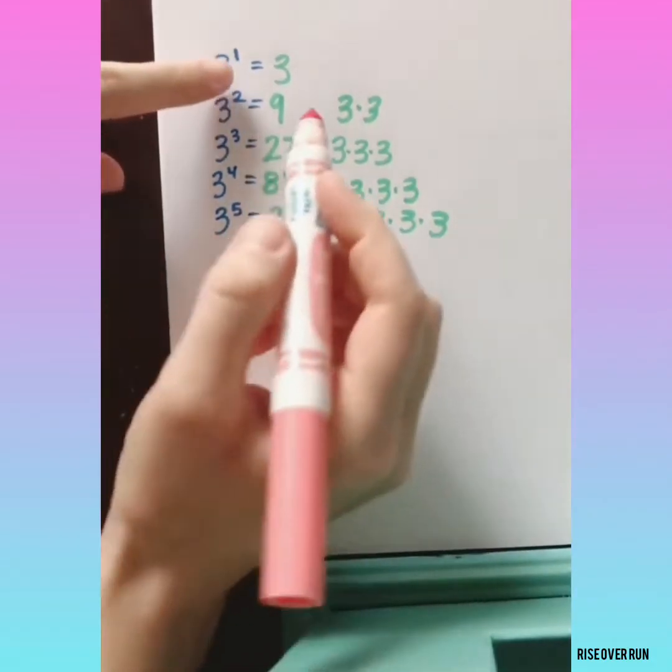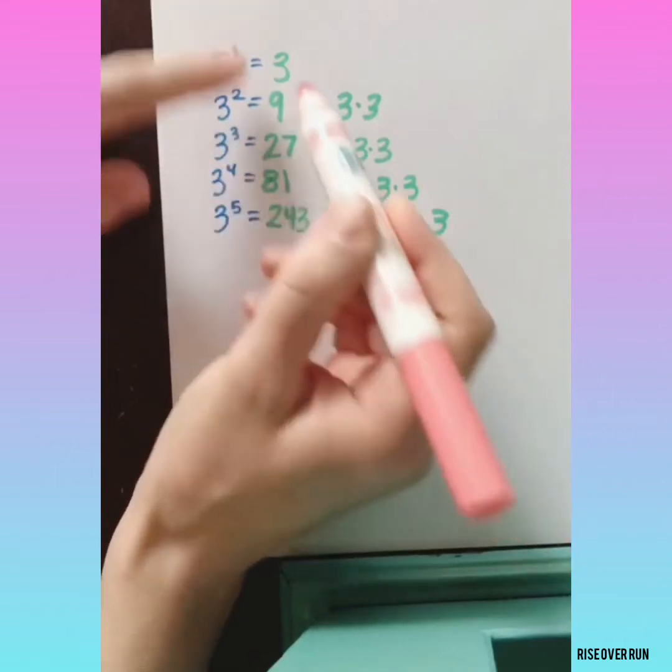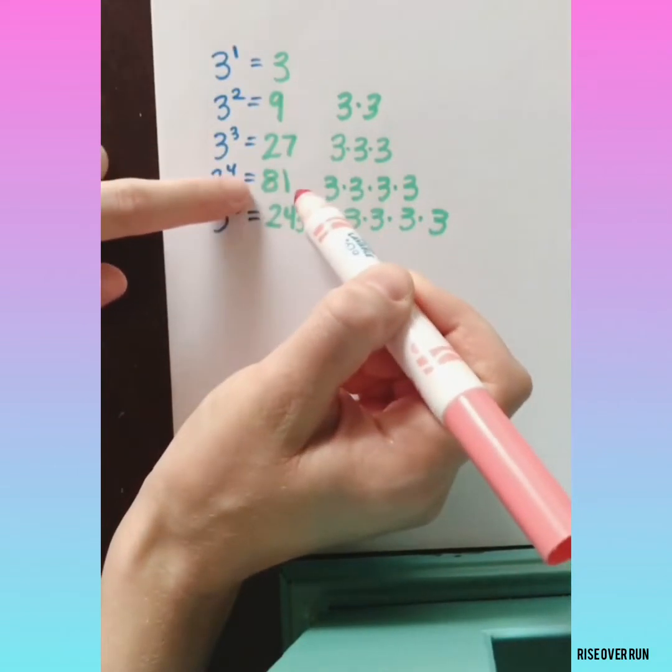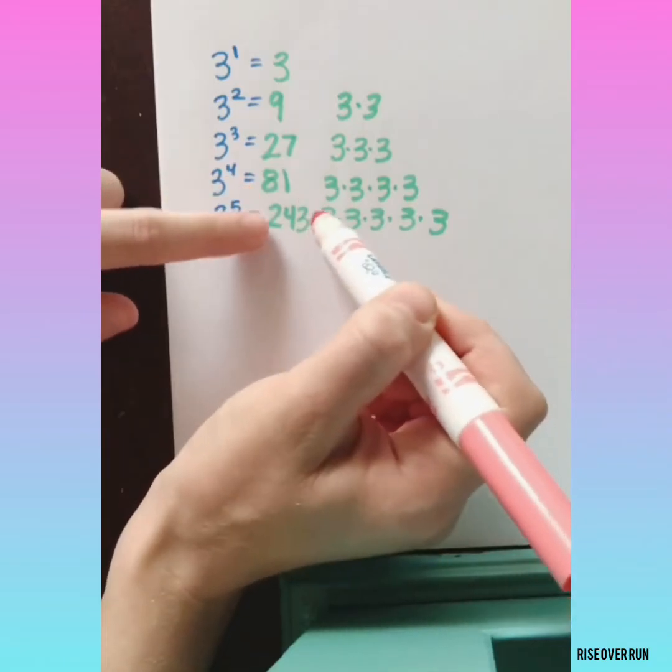Let's look at the pattern here. Following these numbers down the line, each one gets multiplied by 3 to create the next one. So if I move backwards, I divide by 3.